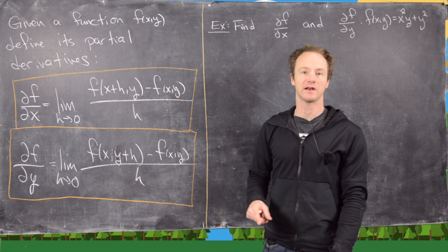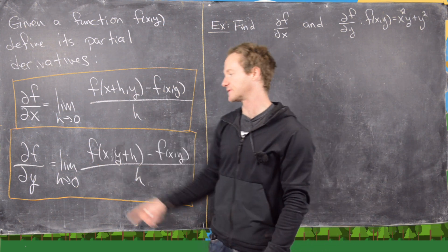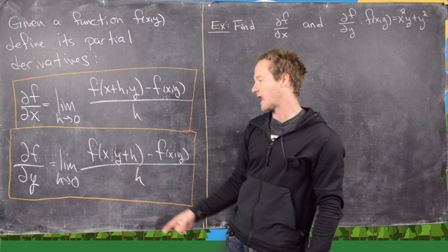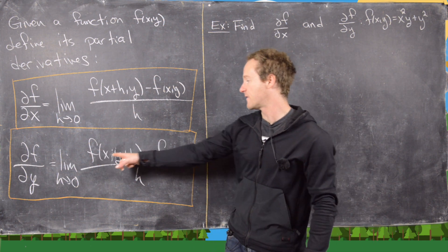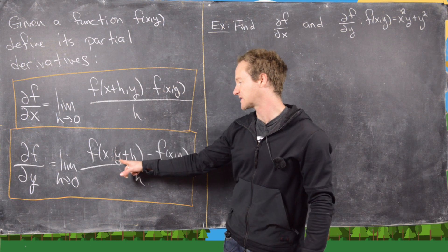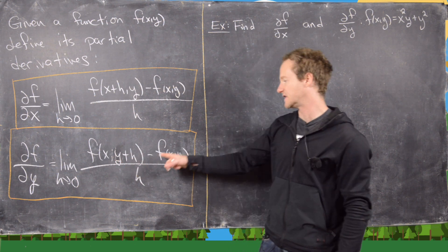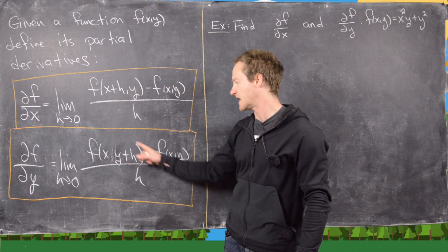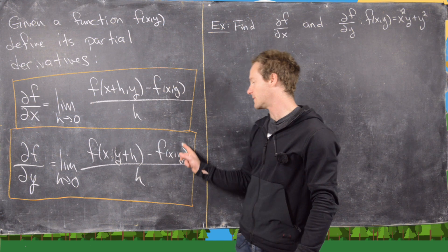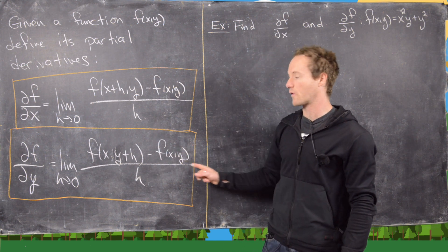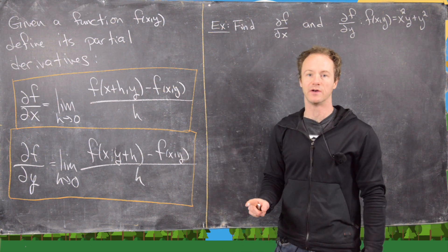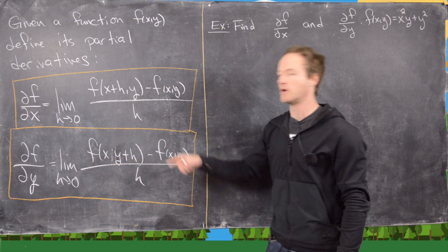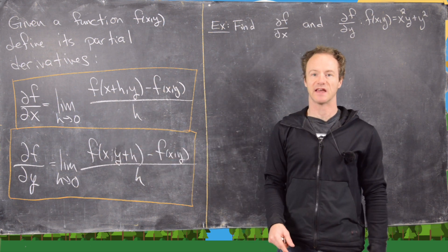And then we can define the partial of f with respect to y by the limit as h goes to 0 of f(x, y+h) minus f(x, y) over h. So again, we're taking this limit as the y component is changing, but the x component is staying the same.